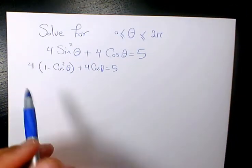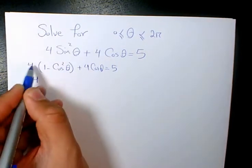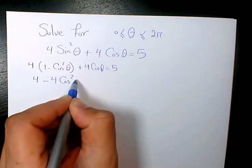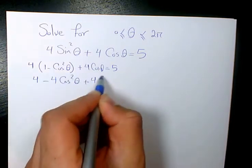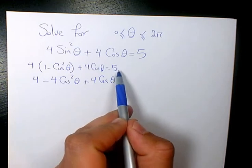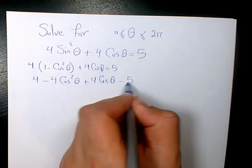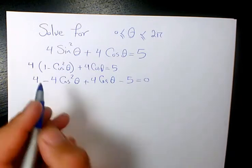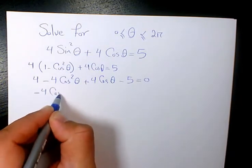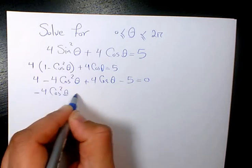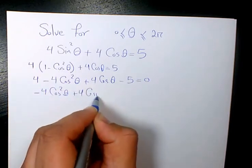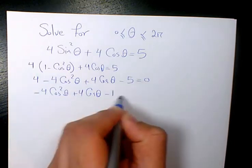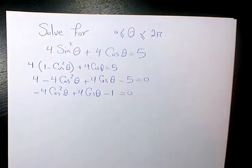Then I'll expand: 4 times 1 is 4, and 4 times negative cosine squared theta gives negative 4 cosine squared theta, plus 4 cosine theta. I bring the 5 to the left-hand side so it becomes negative 5. Organizing, I have negative 4 cosine squared theta plus 4 cosine theta plus 4 minus 5, which gives negative 4 cosine squared theta plus 4 cosine theta minus 1 equals 0.